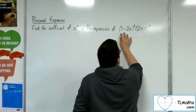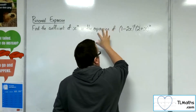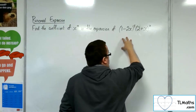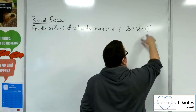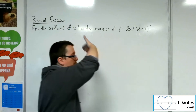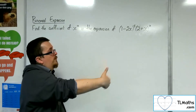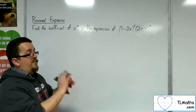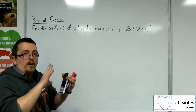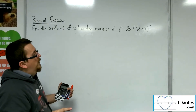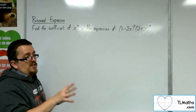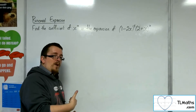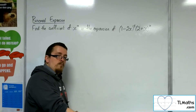The first bracket will have a constant term, a linear term (x to the 1), x squared, x cubed, x to the 4, and x to the 5. The second bracket will have a constant term, x to the 1, x to the 2, 3, 4, 5, 6, and 7. So there are no x to the 10 terms in either bracket on their own.